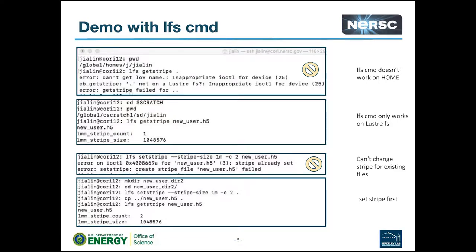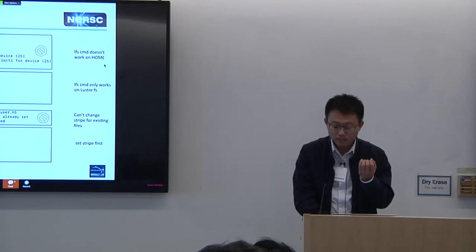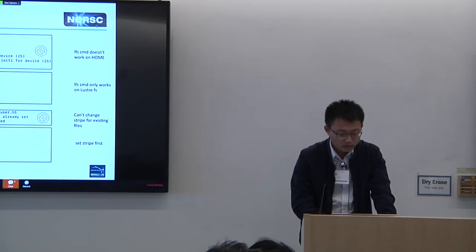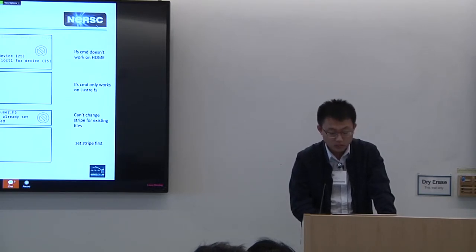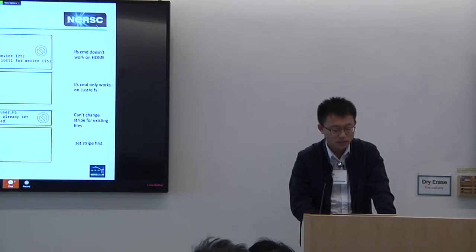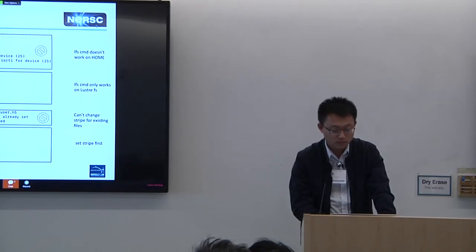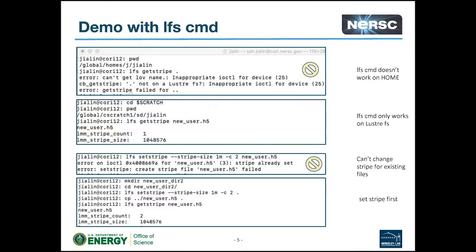We know that the home directory is based on GPFS, not Lustre — that's why you see the error. If you cd into scratch and make sure you see the path 'global/cscratch1/sd' followed by your username, then you are on the Lustre file system. Run 'LFS getstripe' with any existing filename to see how many OSTs are being used. By default, any new file created on scratch uses just one OST.